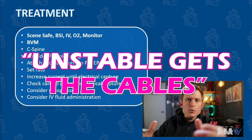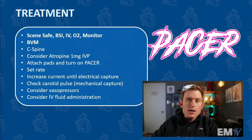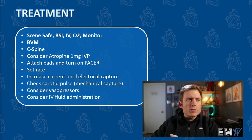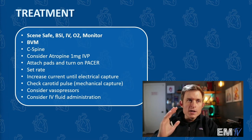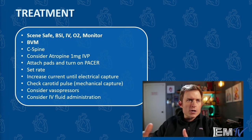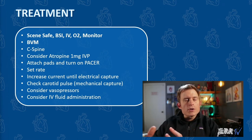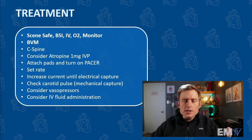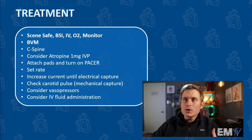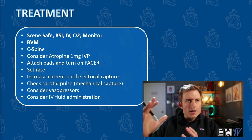Because this patient is unstable — and as the saying goes, unstable gets the cables — attach pads and select the pacer function on the monitor. Set the rate between 60 and 100, and increase the current until you see electrical capture, then check a carotid pulse to confirm mechanical capture. Consider vasopressors and fluid administration. With neurogenic shock the goal is to avoid overhydration since no blood was lost, so start vasopressors earlier. However, the unstable pelvis could indicate hypovolemia as well. Pressors of choice include dopamine, norepinephrine, or epinephrine. Once done, call for rapid transport.